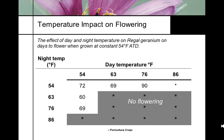Regal geraniums — also called Martha Washington geraniums — are coming back into popularity. They have a temperature pattern requirement where if night temperature exceeds 80°F there is no flowering. We can use day-night temperature differences to schedule flowering because the Martha Washington geranium is very popular for Mother's Day.